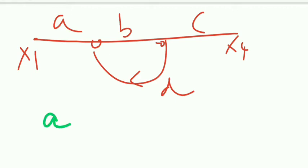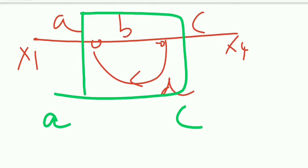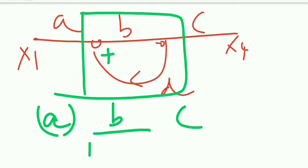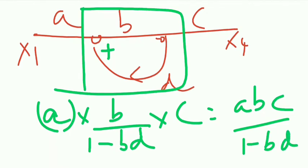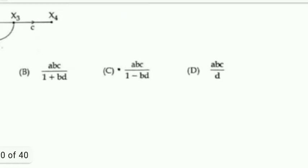We minimize the graph: a, b, c are all in cascade. The section with b and d is a positive feedback structure — not negative feedback. For positive feedback, the simplified version is b divided by (1 minus bd). So everything in cascade gives: abc/(1−bd). The answer is option C.